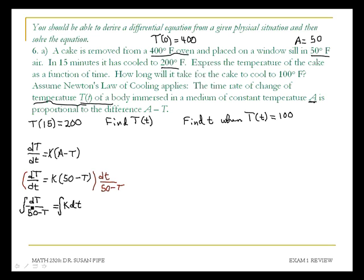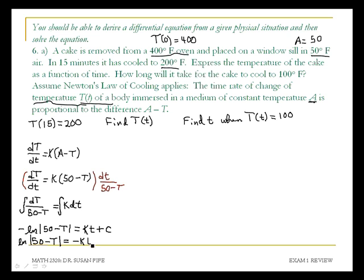On the left side, when you integrate dT/(50 minus T): if this were T minus 50 I would get the natural log of T minus 50, but because I have that negative in front, I get negative natural log of (50 minus T). On the right side, integrating K dt gives KT plus C.